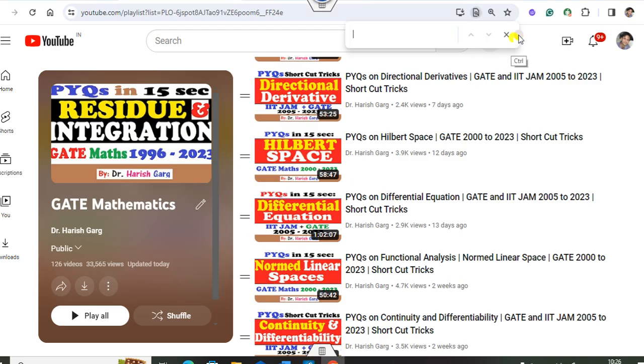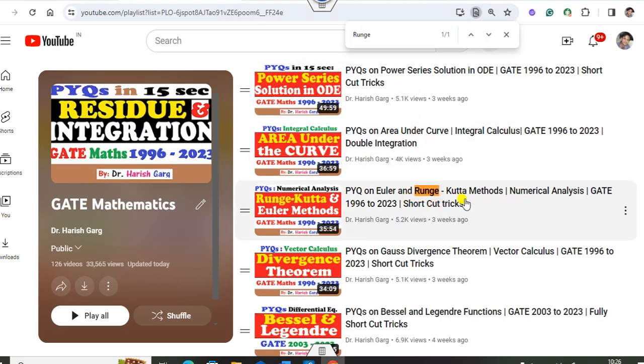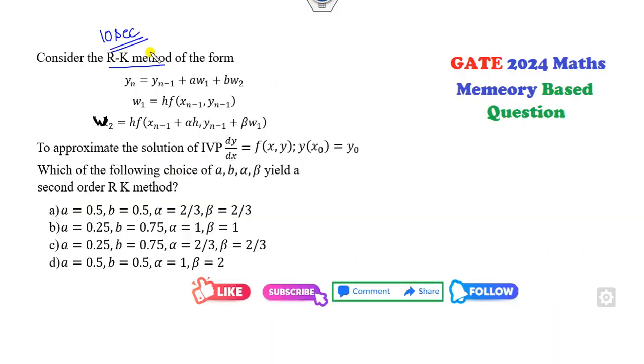What is the trick behind that? If you watch my previous lecture on the Runge-Kutta method, then you can solve this quotient within the 10 second time period. The shortcut trick I gave you is your target is to find A, B, Alpha and Beta.